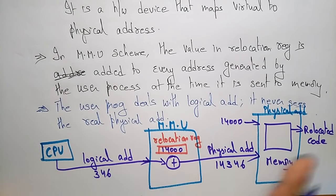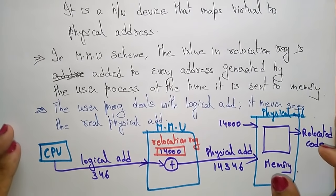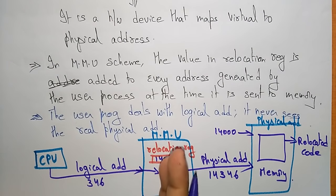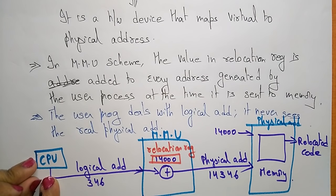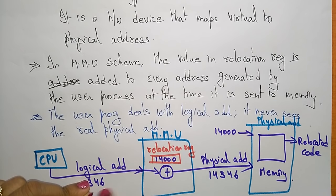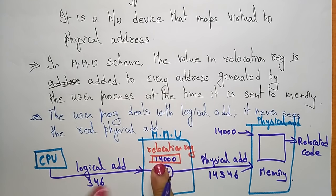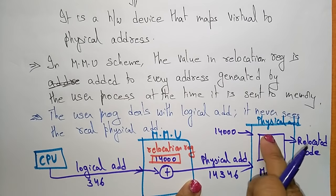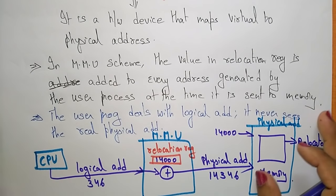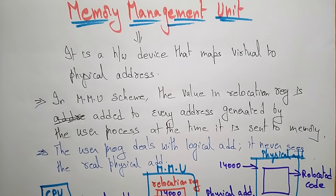This is how the Memory Management Unit performs its operation. The user process program consists of logical addresses; those addresses are added to the relocation register address to produce the exact physical address — in this case 14,346 — where data is stored from 14,000 to 14,346. This concludes the explanation of the Memory Management Unit.